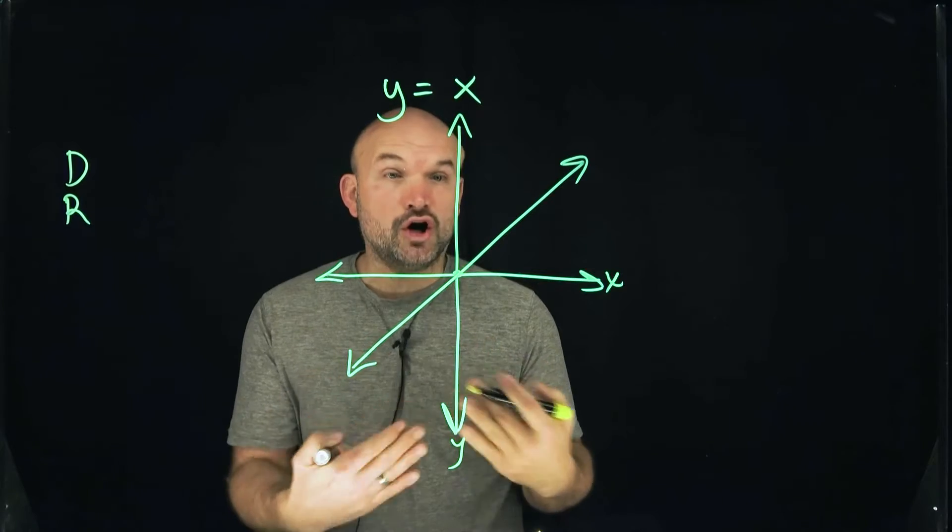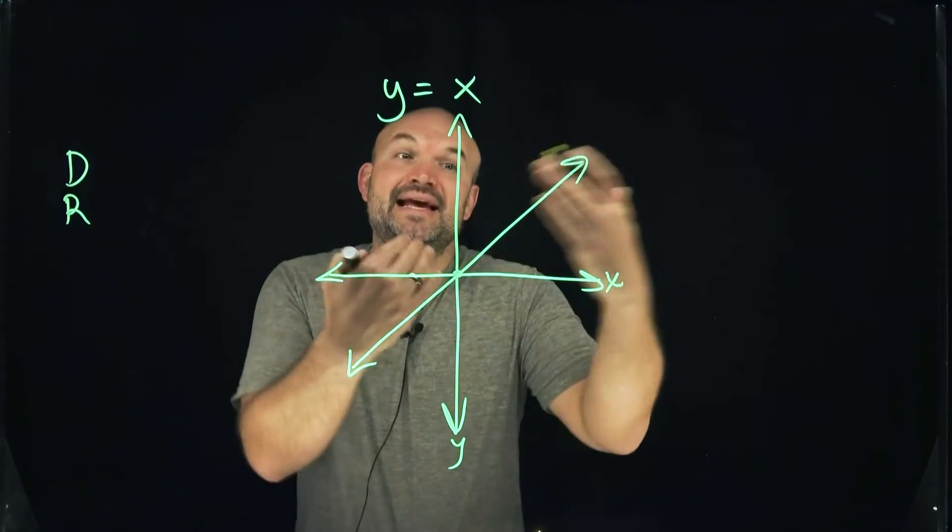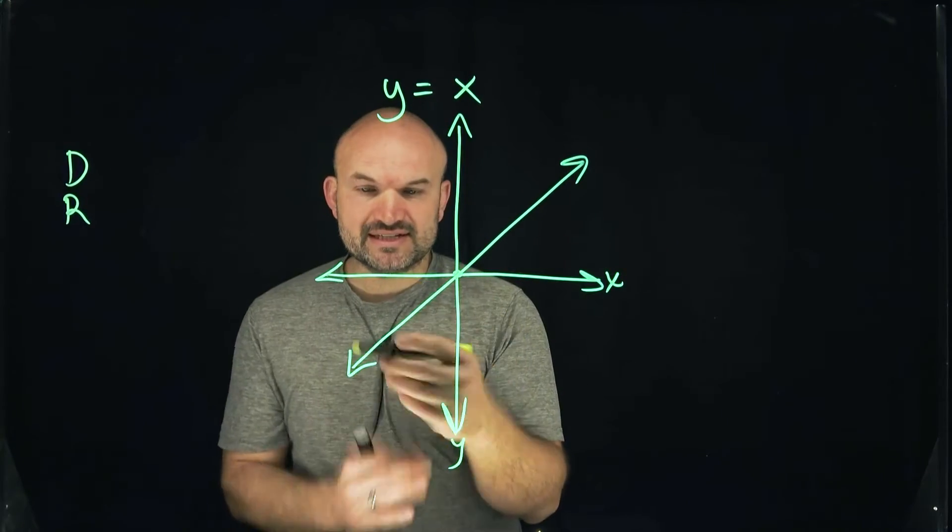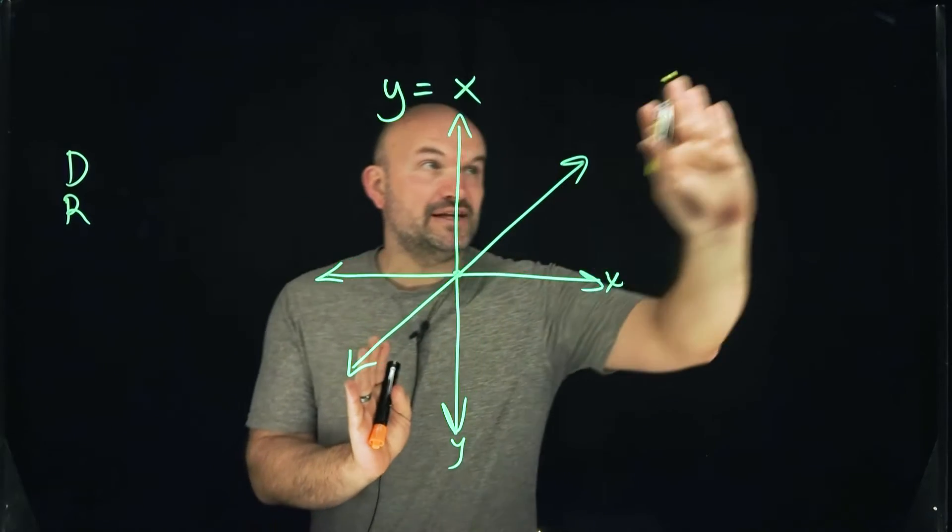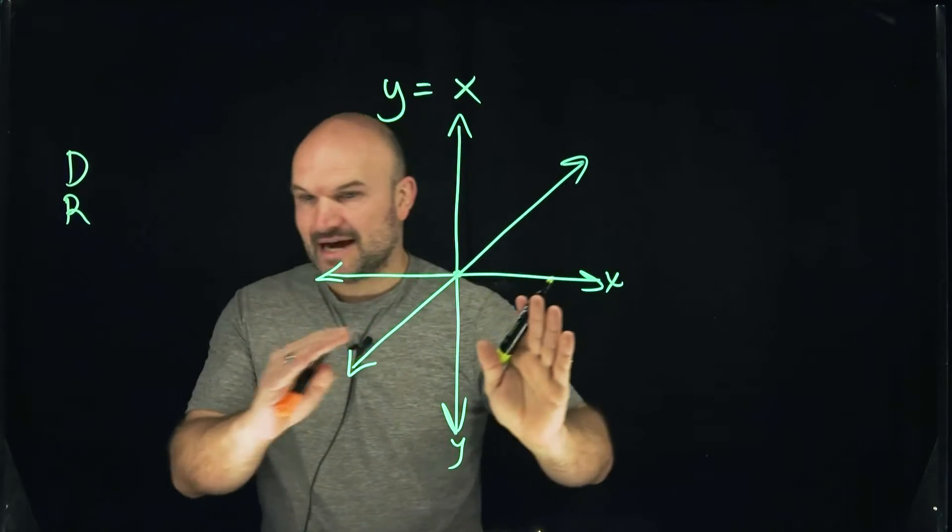We're looking for all the x values that make up this graph, and one thing you can notice is this is a continuous graph. It goes infinitely over to the right and infinitely down to the left.